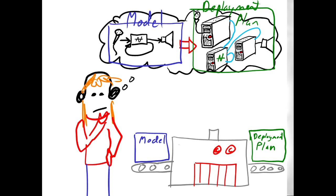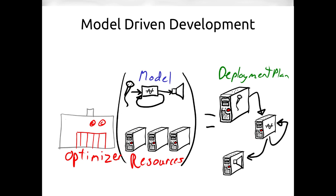Model-driven development can be used to take a model of a synthesizer network — a Cloud Orchestra — and produce a deployment plan. The deployment plan would basically be the allocation of our synthesizers to computers in the cloud. Essentially, we want to take a model, give it to a model generator, and it makes a deployment plan.